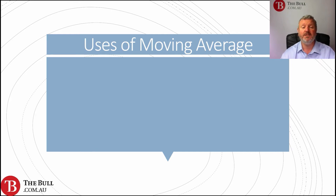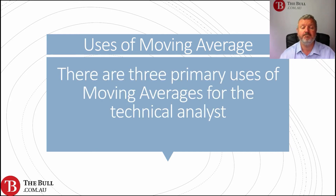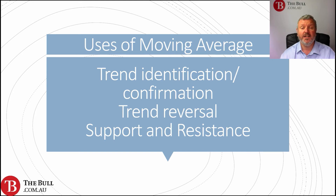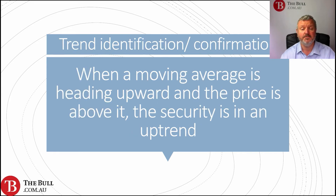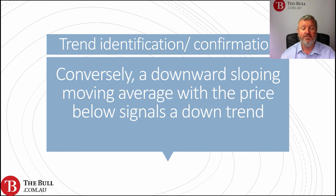We now take a look at some of the uses of moving averages. There are three primary uses for the technical analyst: trend identification and confirmation, trend reversal, and use as simple support and resistance. When a moving average is heading upwards and the price is above it, the asset is seen as being in an uptrend. Conversely, a downward sloping moving average with the price below signals a downtrend.